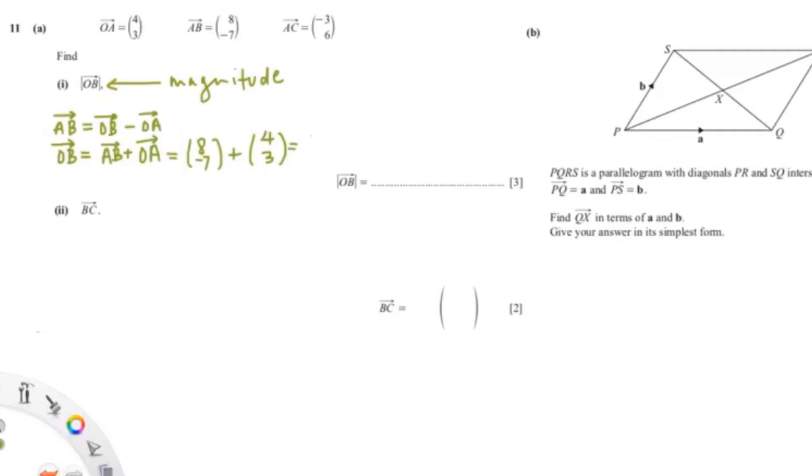So 8 plus 4 equals 12, and negative 7 plus 3 gives us negative 4.